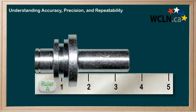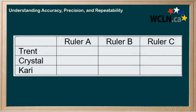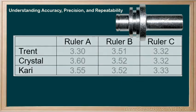We'll do a little experiment with our three rulers here. We recruit three workers and ask each of them to measure this part three times — once with each of the rulers. Now they're asked to measure the part to the nearest hundredth of a centimeter. And here are the results.